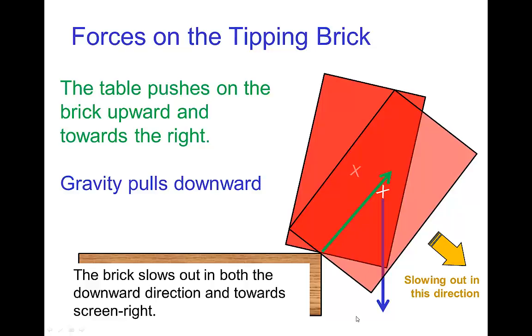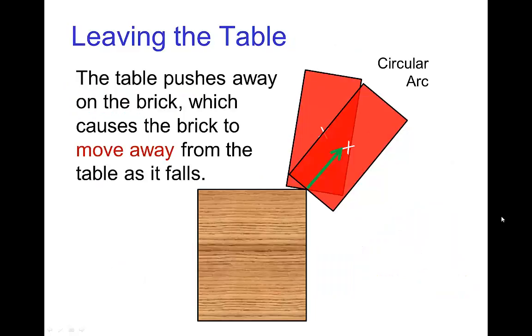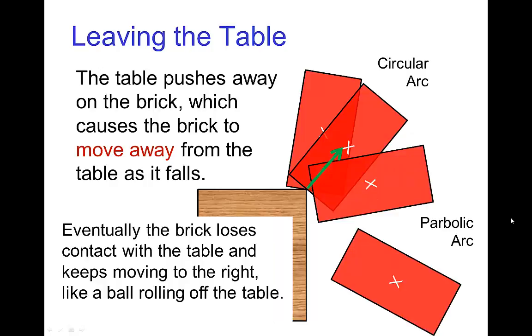The combination of these two forces result in the brick slowing out in the downward direction, but also slowing out in the horizontal direction. The brick as it's rotating is gaining speed downward and it's gaining speed away from the table. So the brick rotates on a circular arc while it's in contact with the table.